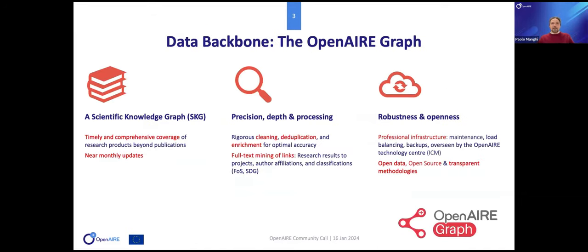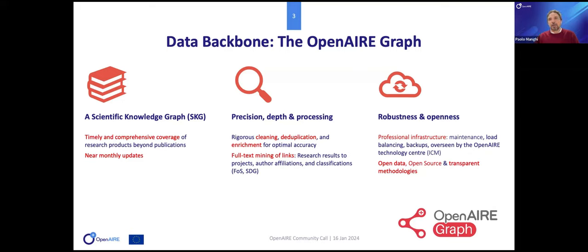It's a big data collection which requires a quite resource-consuming data backbone. We need to represent a snapshot of the whole research outcomes globally at a specific moment, ensuring comprehensive coverage with monthly updates. We go through rigorous and transparent cleaning, deduplication, and enrichment phases. We have full text mining and artificial intelligence to compensate for lack of metadata quality or completeness. The graph runs on a professional infrastructure located in Poland at ICM, a known data center in Europe.